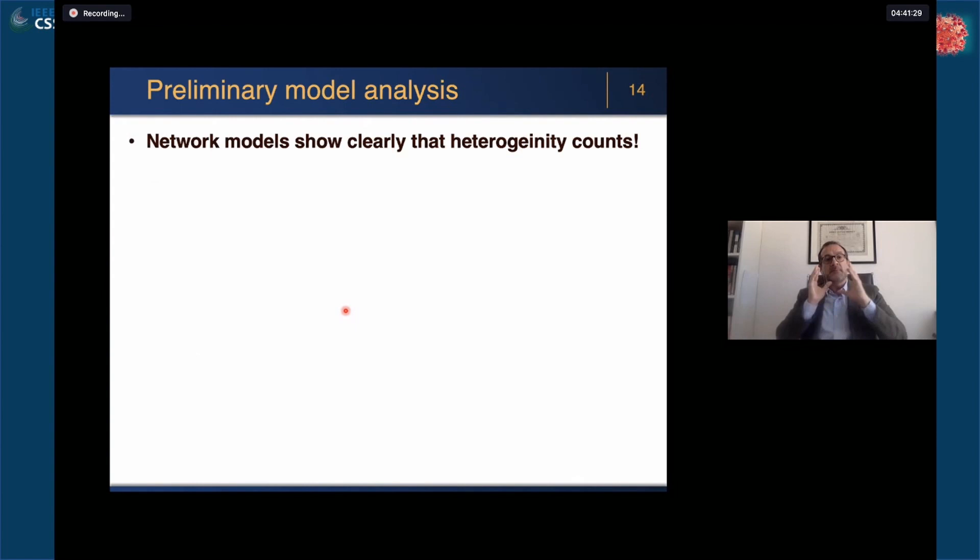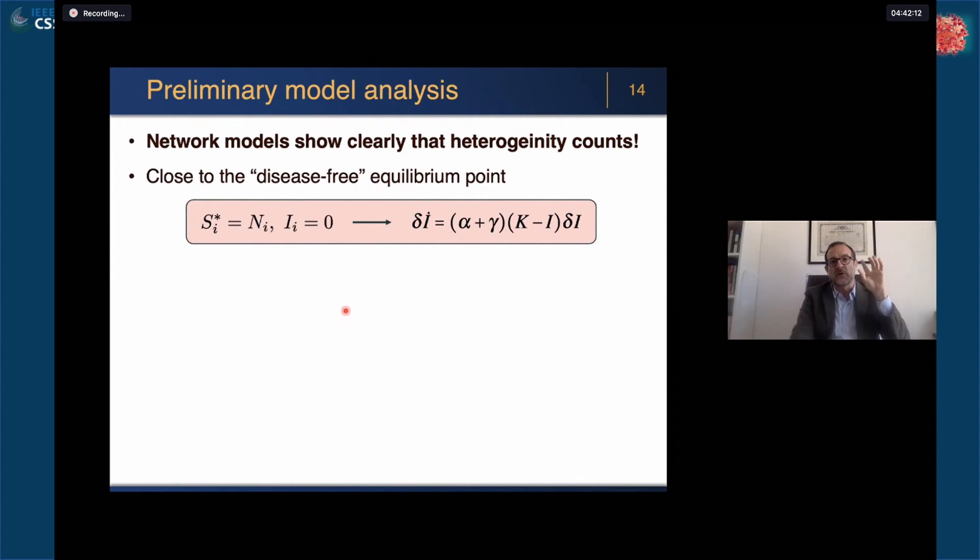Now we have a parametrized model for each region, we have fluxes estimated from available databases, and we can do some preliminary model analysis. What is the message I want to portray? That network models show clearly that heterogeneity counts. And this is not only our model, but also other models in the literature. I became aware just a few days ago of this nice paper by Marino Gatto and Andrea Rinaldo that is coming out in PNAS, where they also had a similar independent idea using a network model at the provincial level.